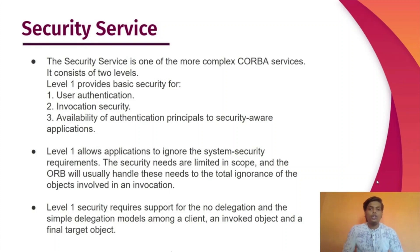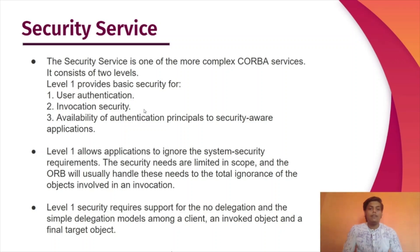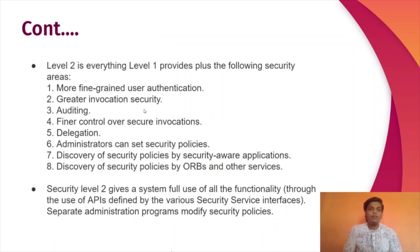The next service is the security service, which is one of the more complex CORBA services. It consists of two levels. Level 1 provides basic security for user authentication, invocation security, and availability of authentication principles to security-aware applications. Level 1 allows applications to ignore system security requirements, as the ORB usually handles these needs without the objects being aware. Level 1 security requires support for the no-delegation and simple delegation models among a client, an invoked object, and a final target object. Level 2 includes everything Level 1 provides plus full use of all security functionality, with separate administration programs to modify security policies.